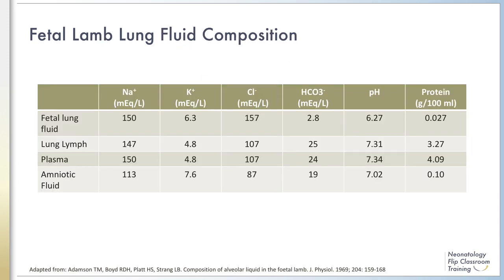Moving back to the late 1960s, Adamson and colleagues examined the composition of fetal lamb lung fluid. They confirmed the earlier finding of markedly elevated levels of chloride in the lumen of the fetal lung, while also demonstrating a marked decrease in pH and bicarbonate. Some postulate that the acid pH may help to activate chloride channels, but this has not been proven. Notably, the concentration of sodium and chloride is markedly different in the fetal lung fluid and amniotic fluid, further confirming that lung fluid is not simply swallowed amniotic fluid.